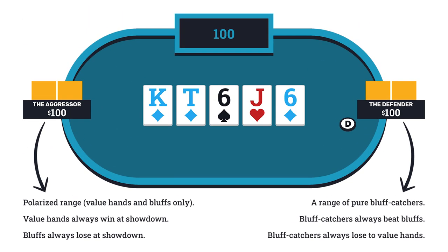Let's pull up the perfect polarization model. For this model, it is a heads-up pot on the river. There's a hundred dollars in the middle and a hundred dollars for each player effective. The out-of-position player is the aggressor. They have a polarized range, which means their range is full of value hands and bluffs only. Their value hands will always win at showdown and their bluffs will always lose at showdown. While the person who is in position has a range of pure bluff catchers — their bluff catchers will always beat the other person's bluffs, and their bluff catchers will always lose when their opponent has a value hand.